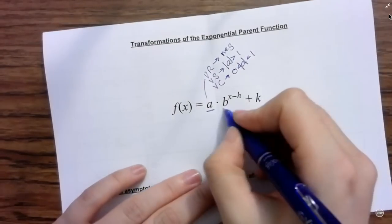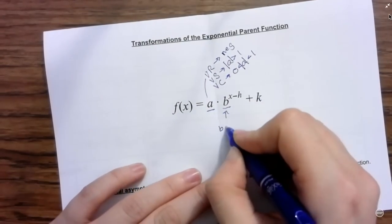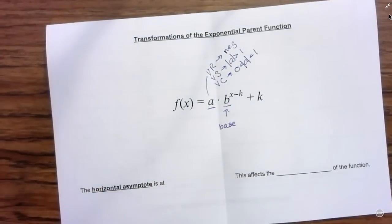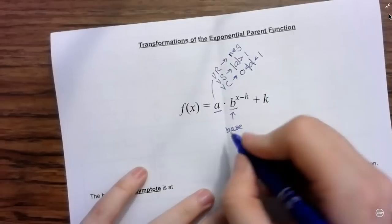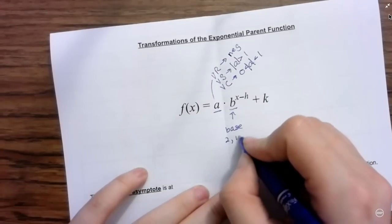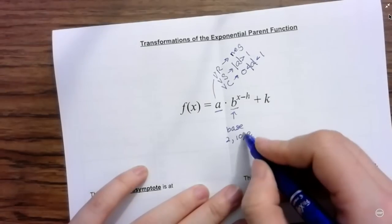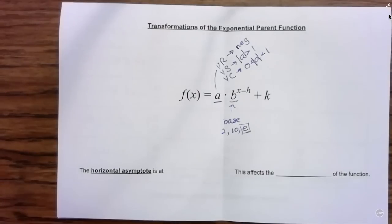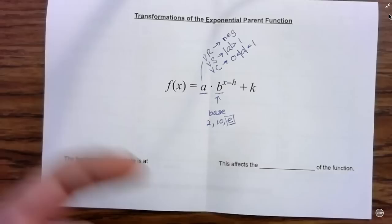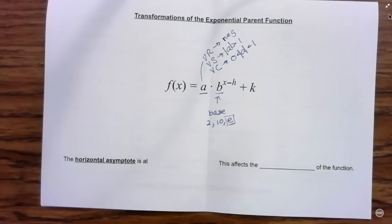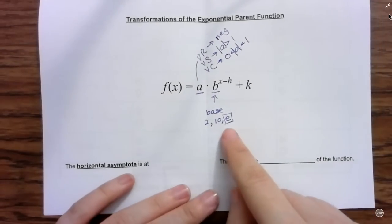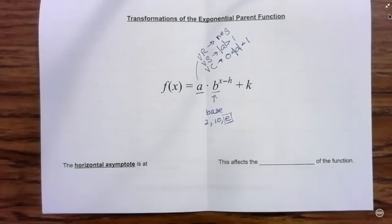Now B is not a transformation per se, it's the base of your exponent. So in this class we are mainly using base 2, base 10, or base e, which we'll talk about later. E is a special number, kind of like pi. It has a never-ending decimal representation and it's used in finance mostly, when you're talking about interest rates.